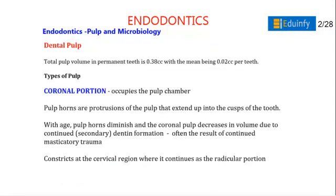Total pulp volume in permanent teeth is 0.38 cc, with a mean of 0.02 cc per tooth. There are two types of pulp: coronal pulp and radicular pulp. Coronal pulp occupies the pulp chamber. Pulp horns are protrusions of the pulp that extend into the cusps of the teeth. These pulp horns get diminished and the coronal pulp decreases in volume due to secondary dentine formation, often the result of continued masticatory trauma.